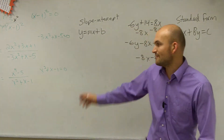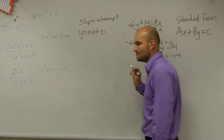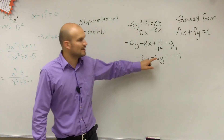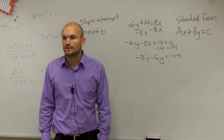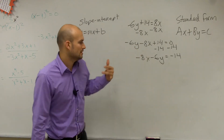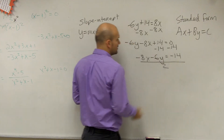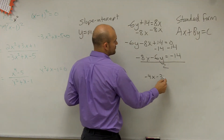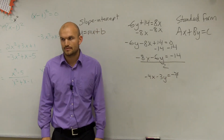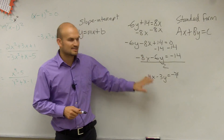So now, if you guys remember, a, b, and c are all real numbers. But the one important thing is we cannot have a common factor greater than 1. Do these share a factor that's greater than 1? Yes. What is the number that divides into all of those? 2. So we're going to divide everything by 2. And what you get is negative 4x minus 3y equals negative 7. Now it is in standard form. That is the simplest way to write that equation. That's why we factor out the 2.